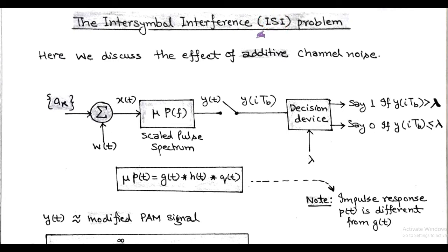Also, we discuss the effect of additive channel noise. The block diagram of the simplified baseband transmission system is shown in the figure. The characteristic of the overall system is represented by the scaled pulse spectrum μ·P(f). In the time domain, it is given by μ·p(t) = g(t) * h(t) * q(t).